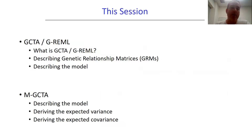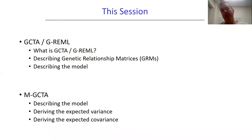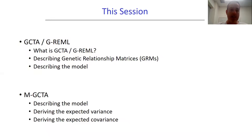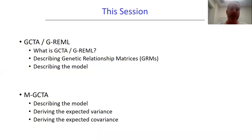In this session we're going to be talking about, first of all, GCTA and GREML — GCTA is the software package and GREML is the method. This is a simpler model than MGCTA, which we really need to understand before we take things further into the MGCTA world. I'm going to start off by talking about what GREML is, describe how we define genetic relationship matrices or GRMs, and talk about the underlying variance components model that GCTA fits. Then we'll move on to MGCTA, describe the model, and derive the expected variances and covariances under the model using path tracing rules.